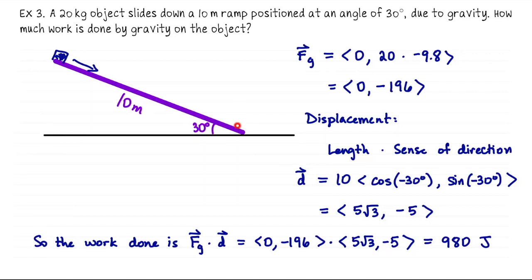If for some reason I told the story that the box slid up the ramp, then gravity would do negative work because the displacement would be in the opposite direction of the force. That concludes this look at work done by a vector moving an object. We will actually return to work much later in the course when we look at vector line integrals. So this is just our first look at this concept.